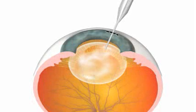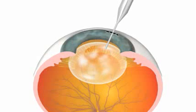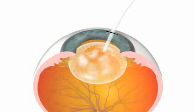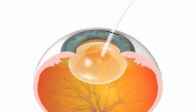An ultrasound tool is used to break up the lens. The lens sits in a thin sack of tissue called a lens capsule. The broken up pieces of lens are removed from the lens capsule through a small tube.